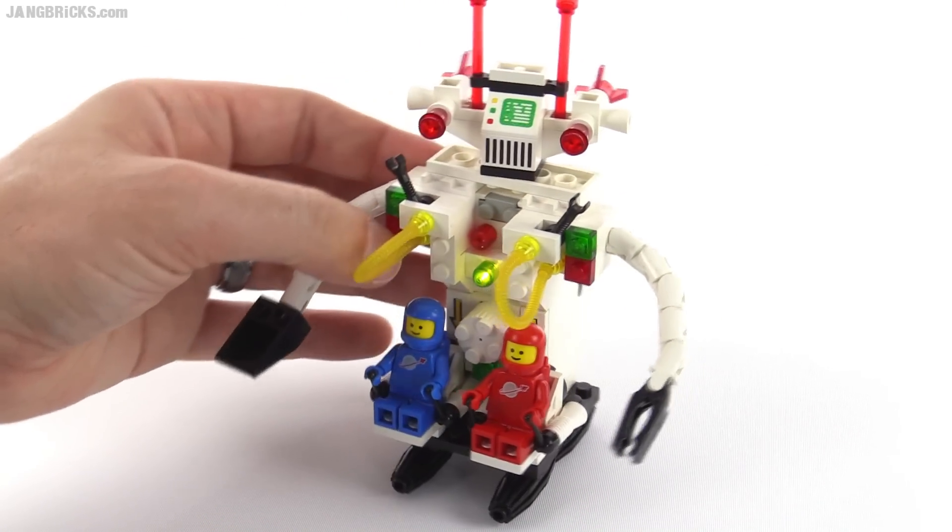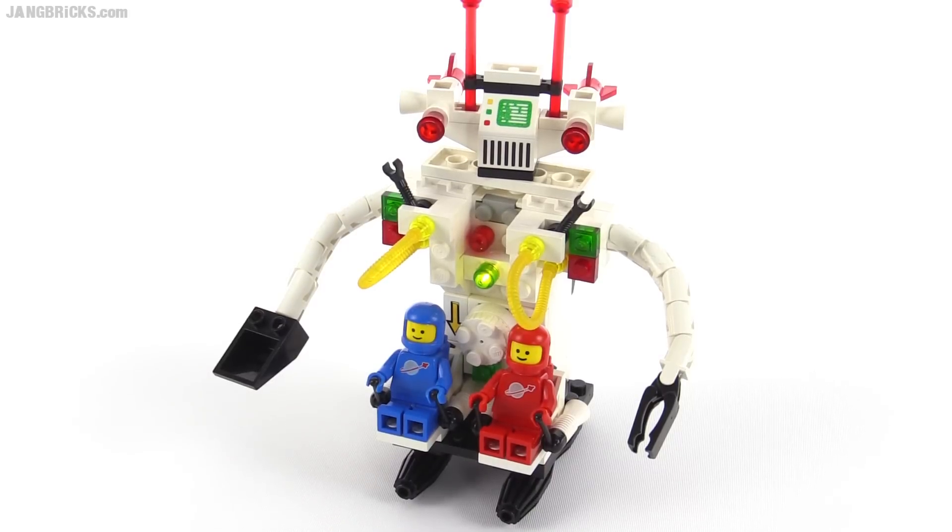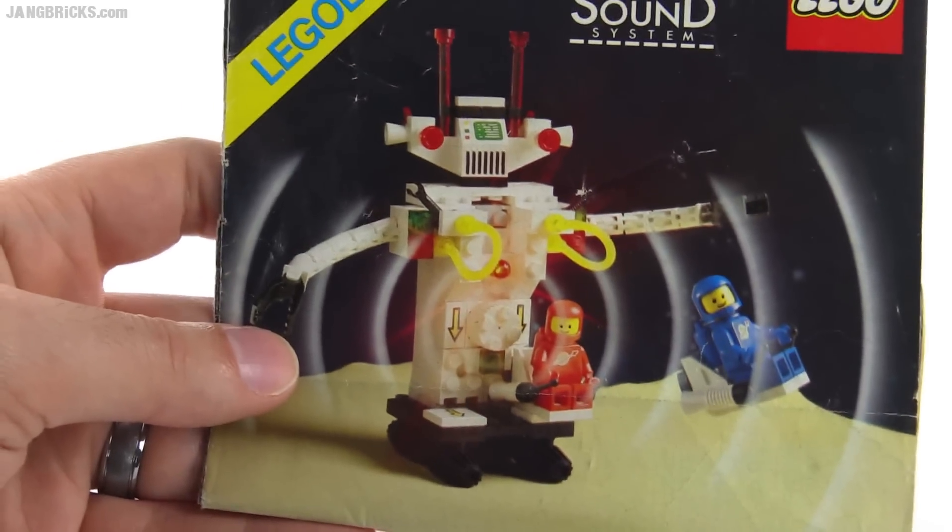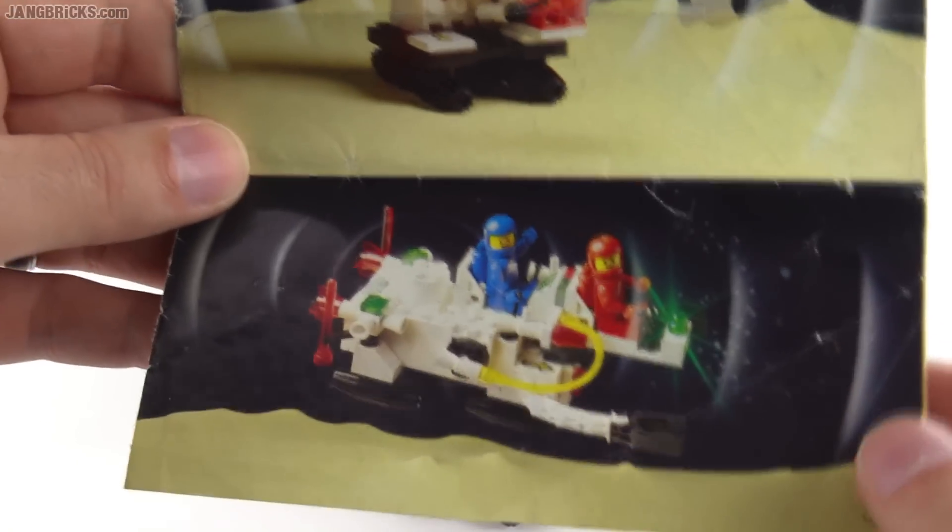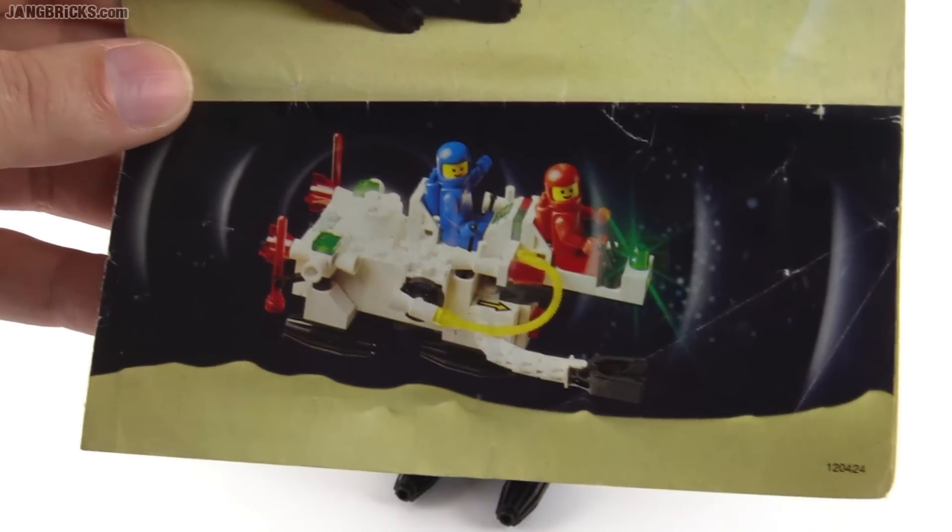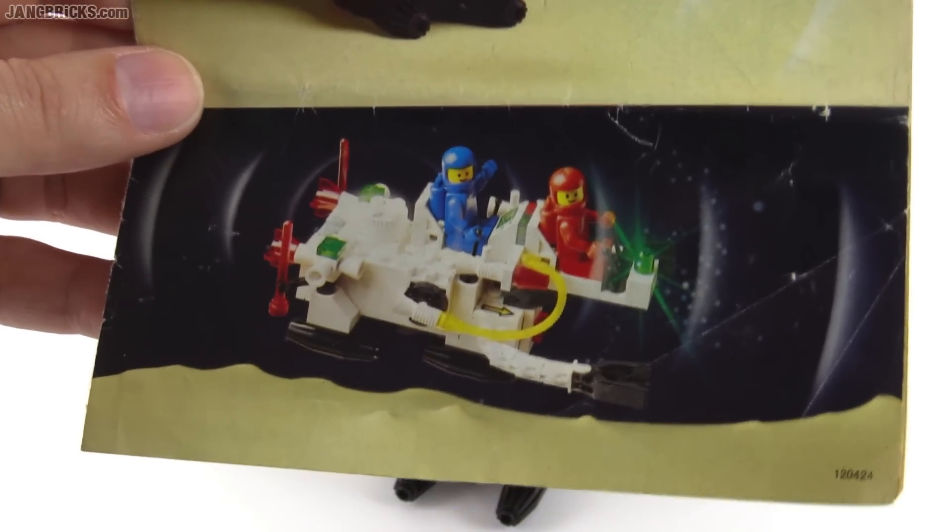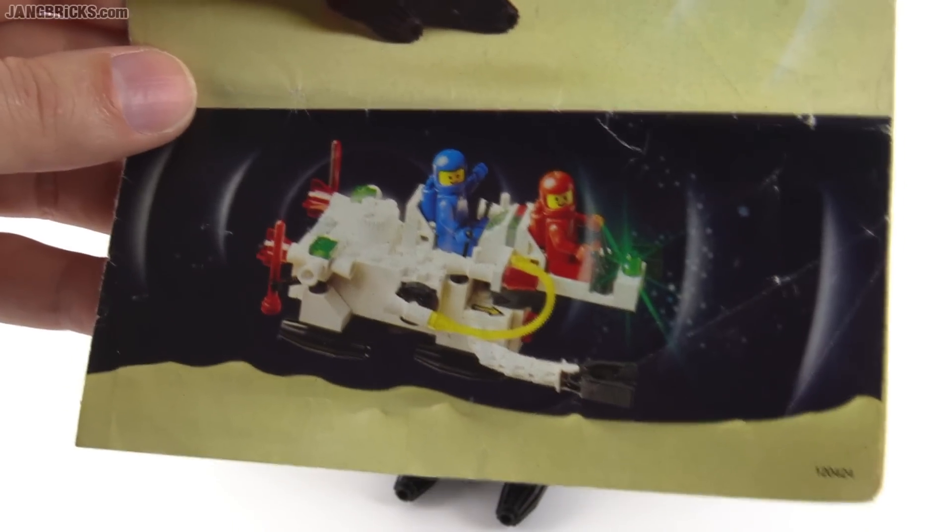So that's it for this set. However, I did get lucky enough to receive the original instruction sheet that came with the set. So you can see the original art there. And this shows an alternate build. Turning it into more of a ship. But it still has the arms on it. So it's still able to grab stuff. I like that idea.